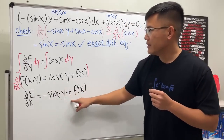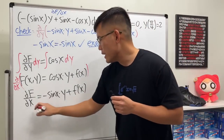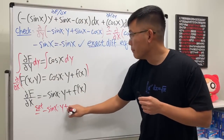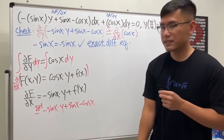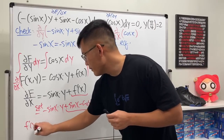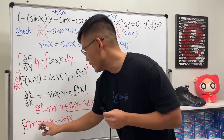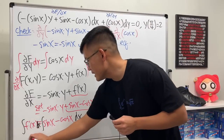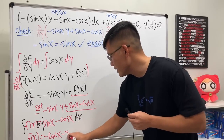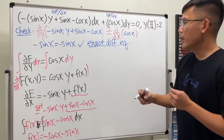We've used the second piece already, so now we utilize the first piece, which represents the partial of F with respect to x. Taking the partial of our expression with respect to x: the derivative of cosine x times y gives negative sine x times y, and we add f prime of x. This must equal negative sine x times y plus sine x minus cosine x, so f prime of x equals sine x minus cosine x. Integrating with respect to x gives f of x equals negative cosine x minus sine x.